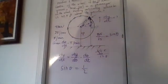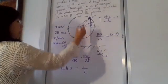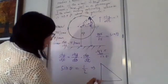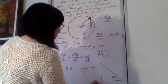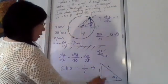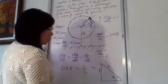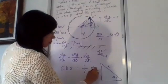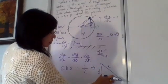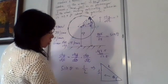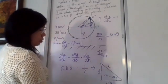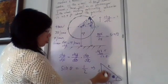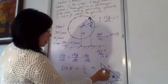Now if sine theta equals one half, we can find angle theta. We draw the special triangle. Sine theta equals one half means opposite equals 1, hypotenuse equals 2 — we remember the special triangle. So the adjacent side is square root of 3. Using the special triangle, the 30-60-90 triangle: 30 degrees faces ratio 1, 60 degrees faces square root 3, and hypotenuse is 2. So angle theta equals 30 degrees, which is π over 6.